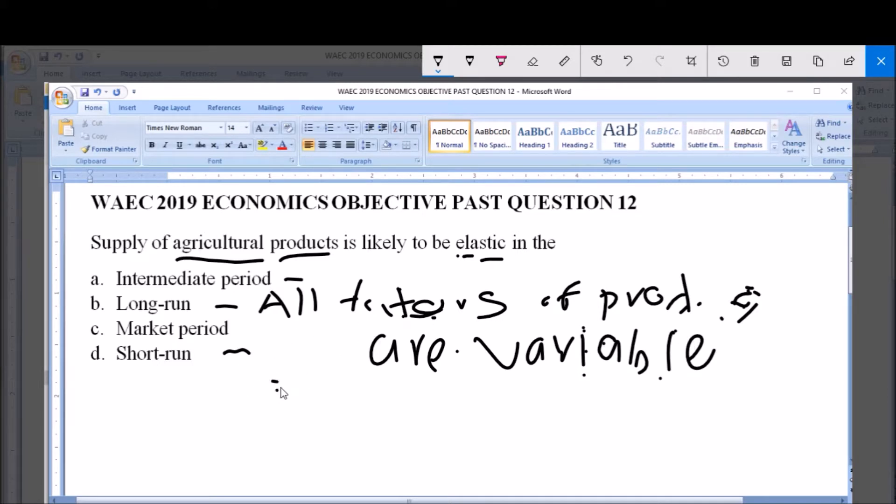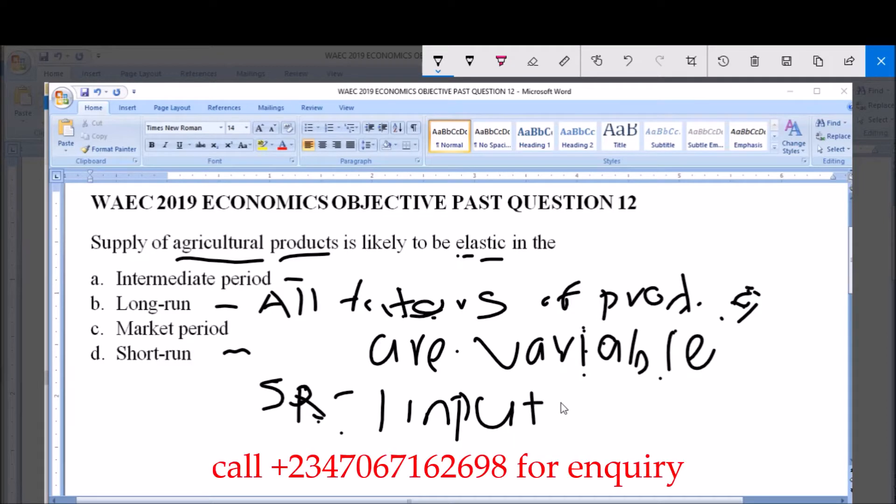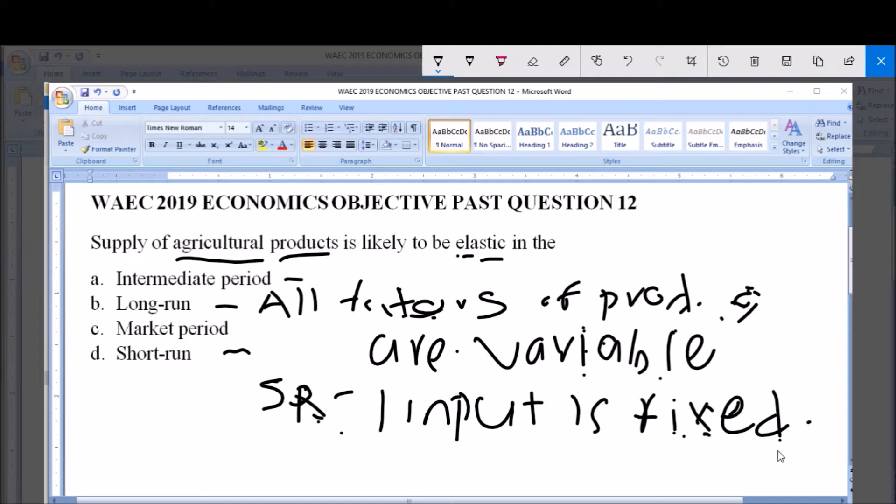For the short run period, one factor or one input is fixed. That is, one input is not variable. So that input is said to be fixed and the others, the other factors or the other inputs are variable.